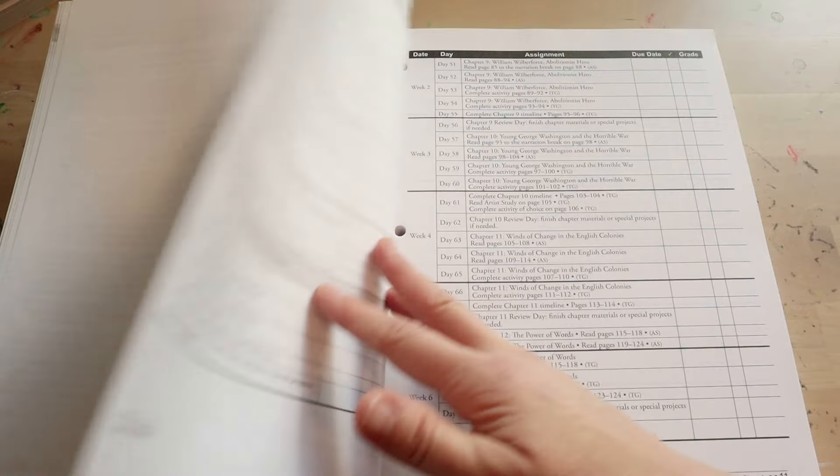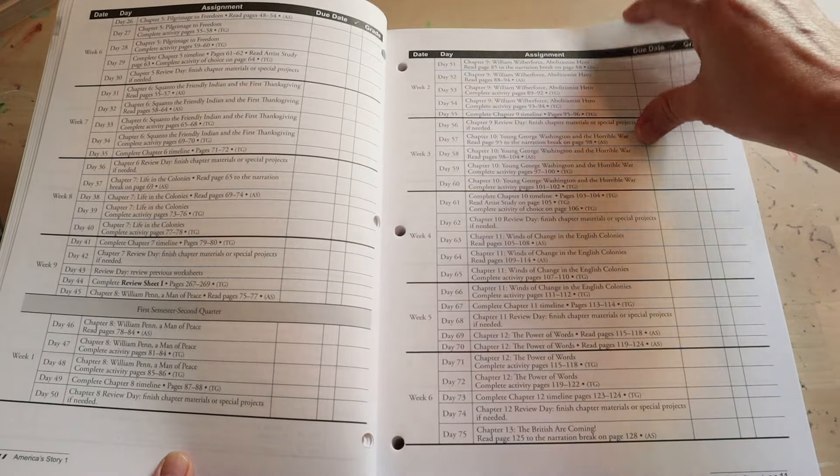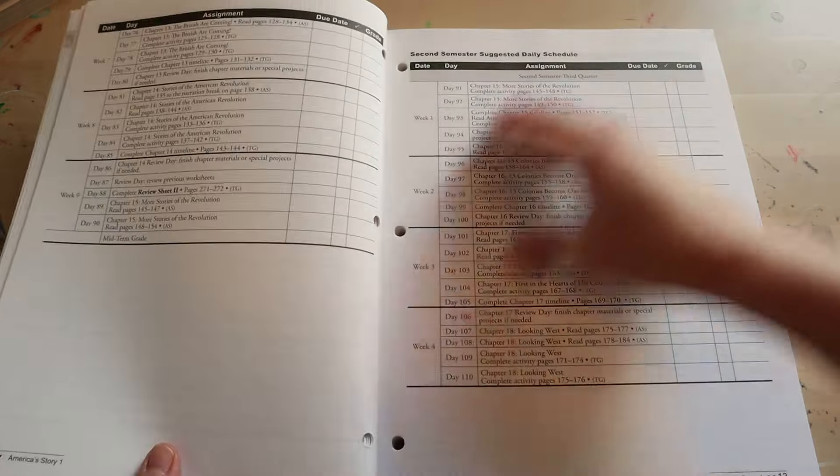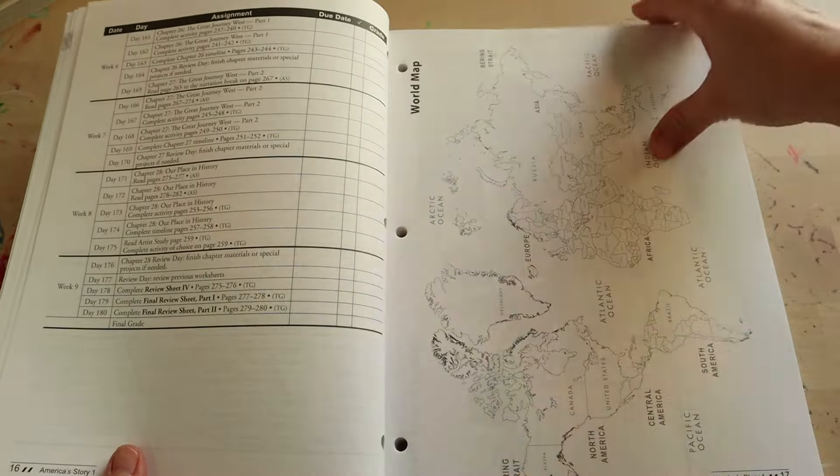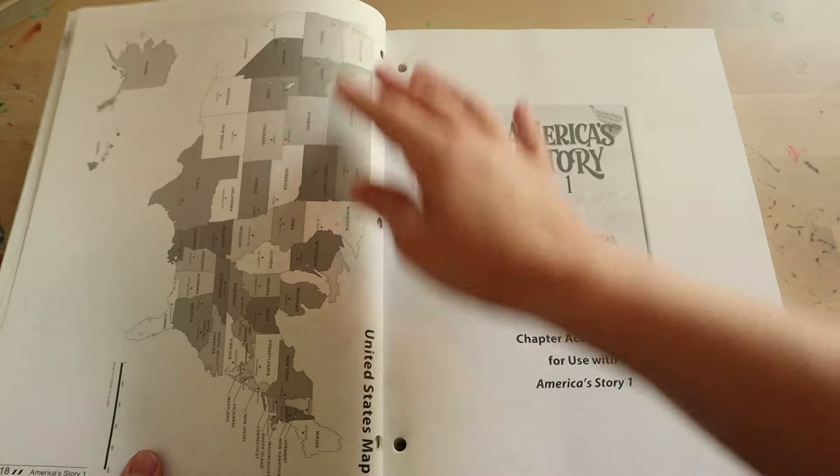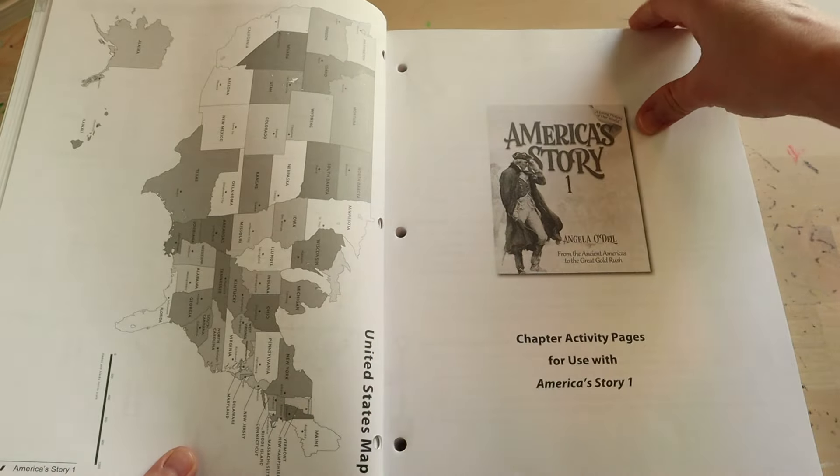So what you're going to do each day, each week, what chapters you're going to be covering, and the pages. And then you're going to get a world map on this sheet and a map of the United States on this one.